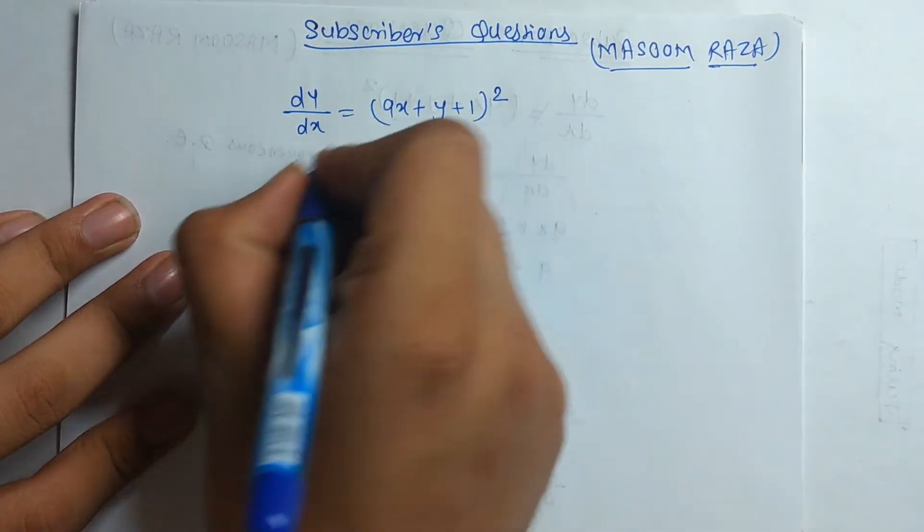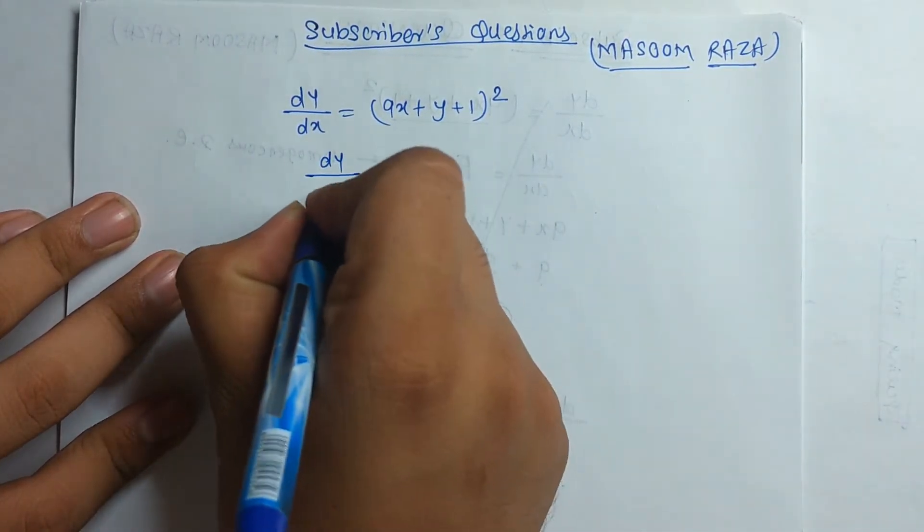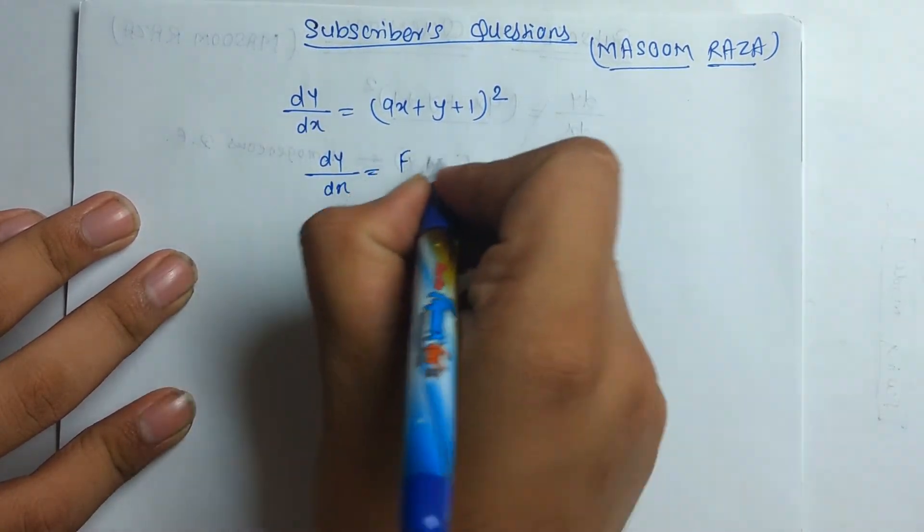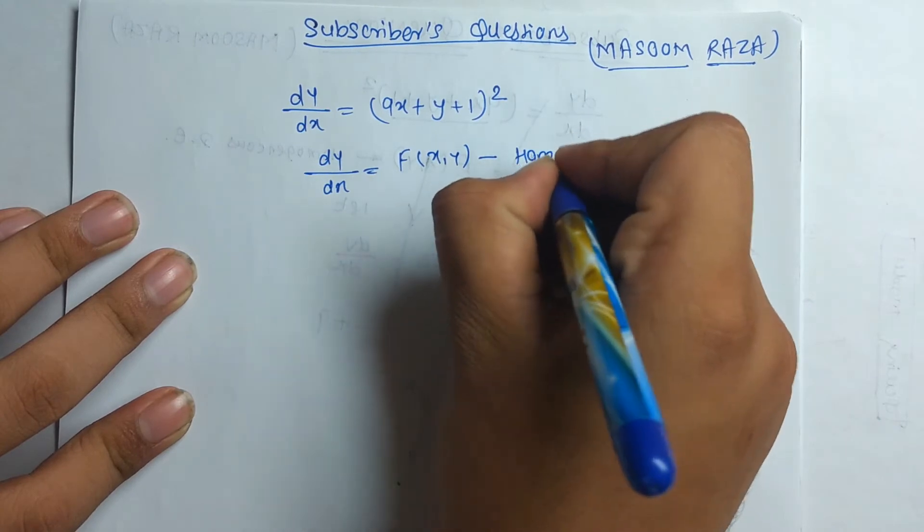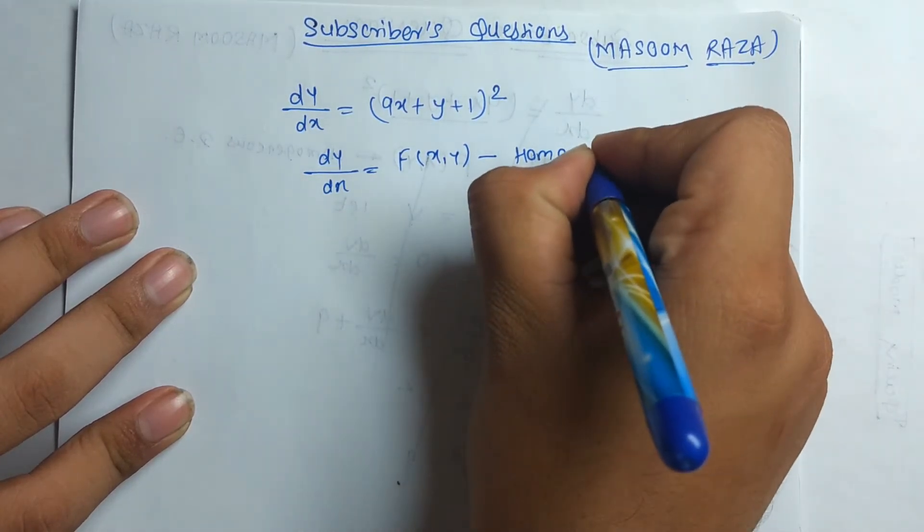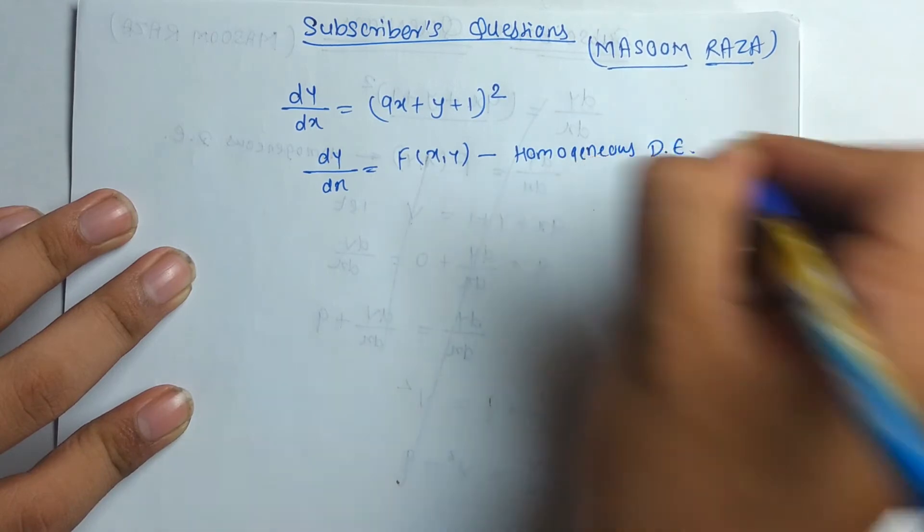To solve this, this equation is the type of, that is when you get dy by dx equal to function of x and y. This type of equation is known as homogeneous equation, homogeneous differential equation.